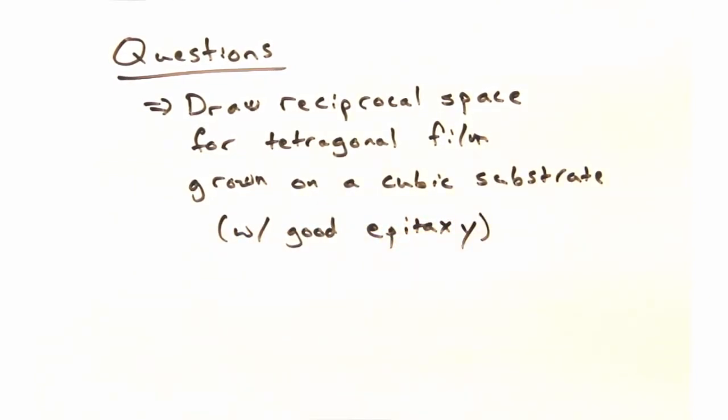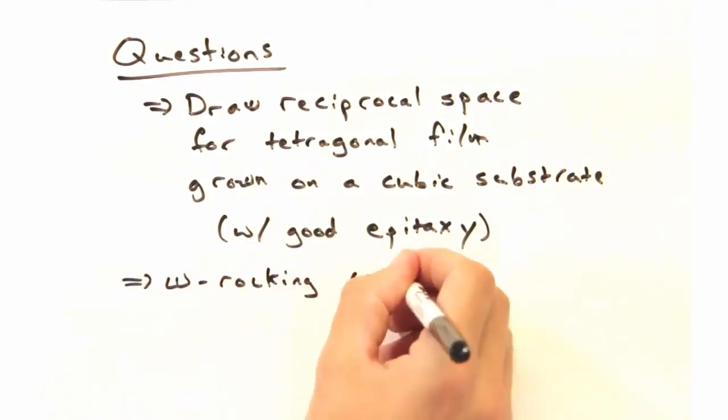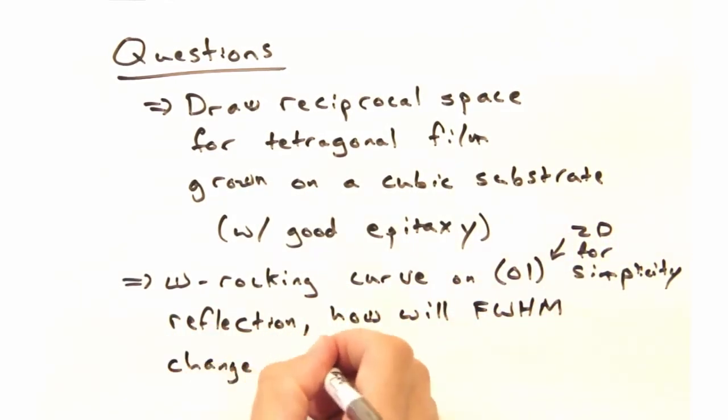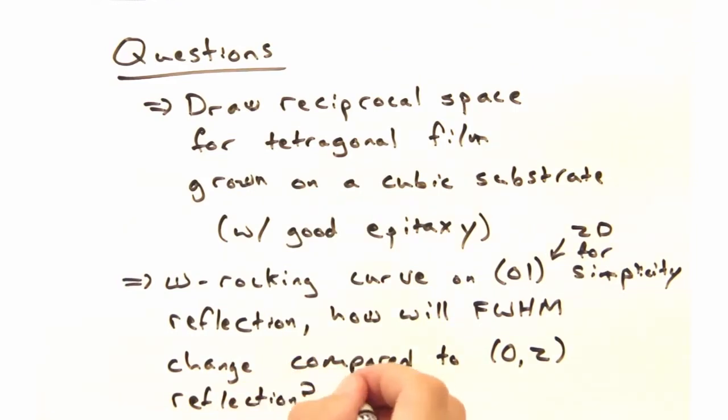And here's the second question. If we do an omega rocking curve on the 0-1 reflection, how do you think the full width half maxima will change if we go out and measure it on the 0-2 reflection?